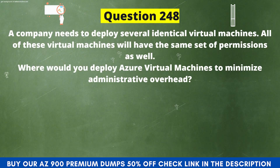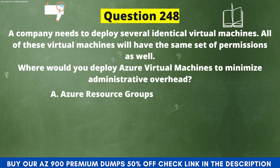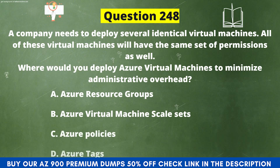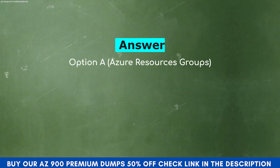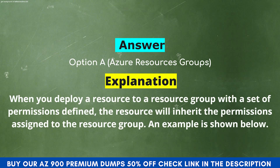Next question. A company needs to deploy several identical virtual machines, all with the same set of permissions. Where would you deploy Azure virtual machines to minimize administrative overhead? Option A: Azure resource groups. Option B: Azure virtual machine scale sets. Option C: Azure policies. Option D: Azure tags. The correct answer is Option A, Azure resource groups. Explanation. When you deploy a resource to a resource group with a set of permissions defined, the resource will inherit the permissions assigned to the resource group.